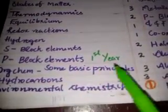P-block elements from first year: two questions. Organic chemistry some basic principles: three questions. Hydrocarbons: three questions. Environmental chemistry: there were no questions from this chapter, but sometimes there may be one question from this chapter.